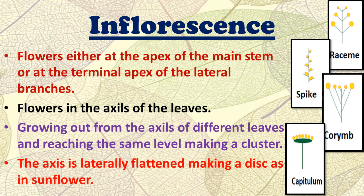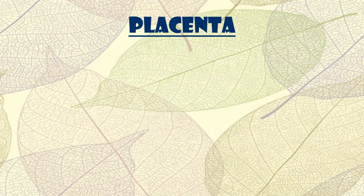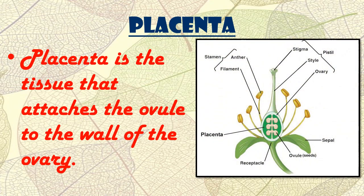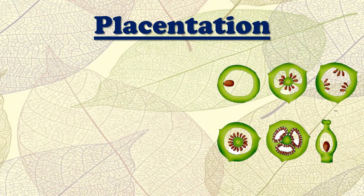So those are the four main types of inflorescence: raceme, spike, corymb, and capitulum. Now let's move to placentation. In our previous video we saw the structure of the ovary and placenta. The placenta is a tissue that attaches the ovule to the wall of the ovary.